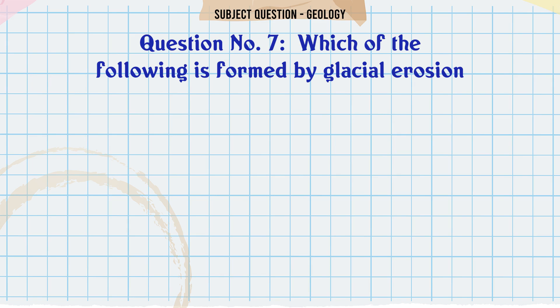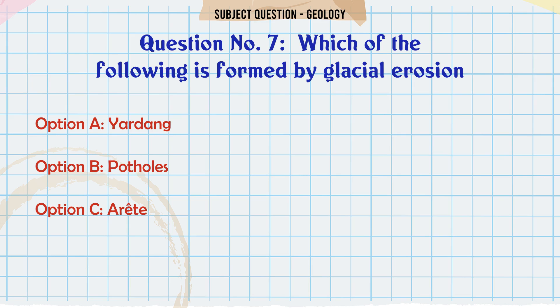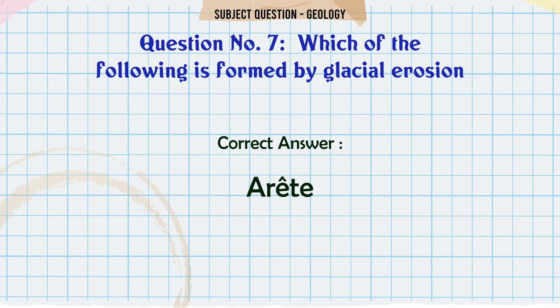Which of the following is formed by glacial erosion? A. Yadang. B. Potholes. C. Arete. D. Q-star. The correct answer is Arete.